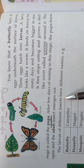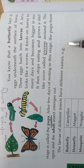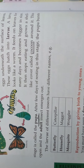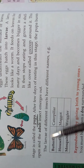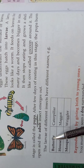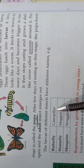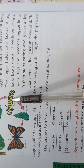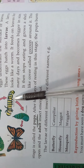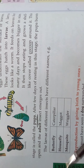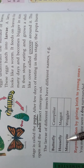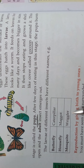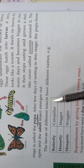The larvae of different insects have different names. The larva of a butterfly is called a caterpillar. The larva of a housefly is called a maggot, and the larva of a mosquito is called a wriggler.